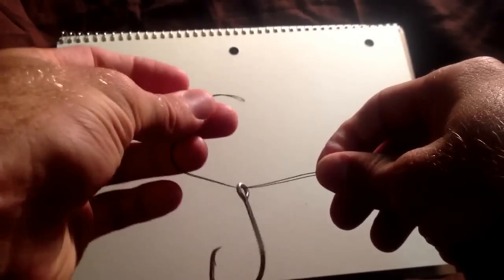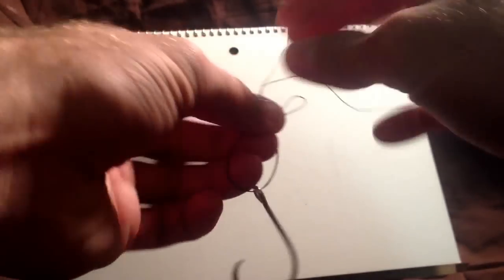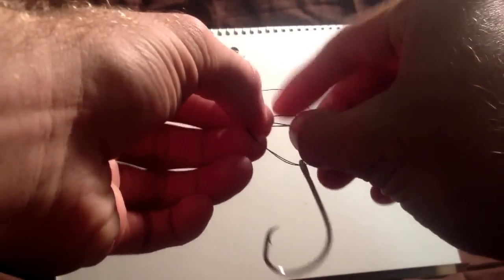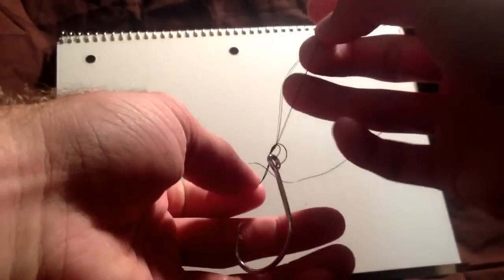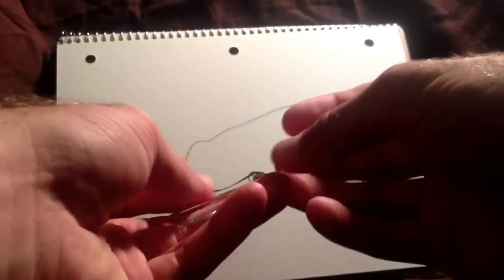Then what you want to do is take your loop end and wrap it around and just do a simple overhand knot on the hook, just like that. But don't pull it tight yet.